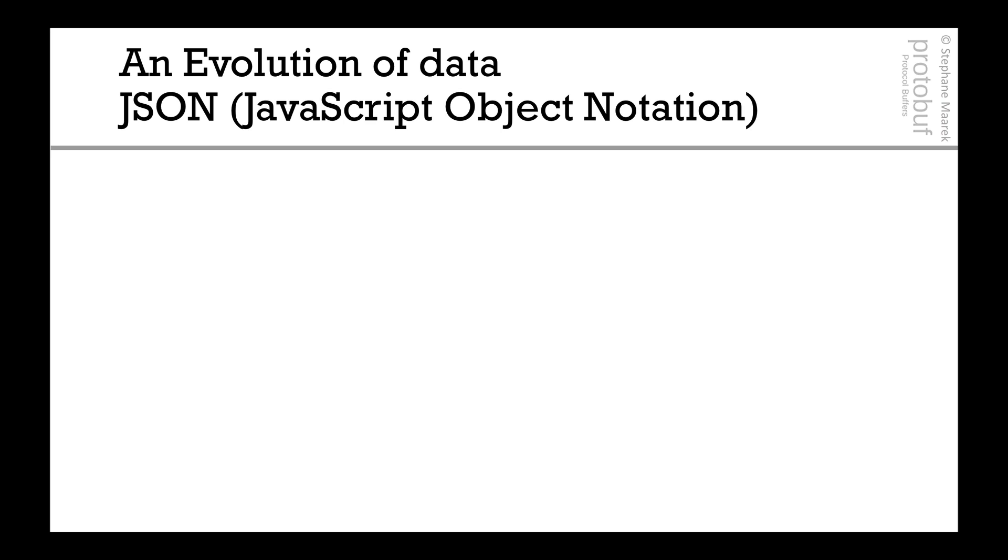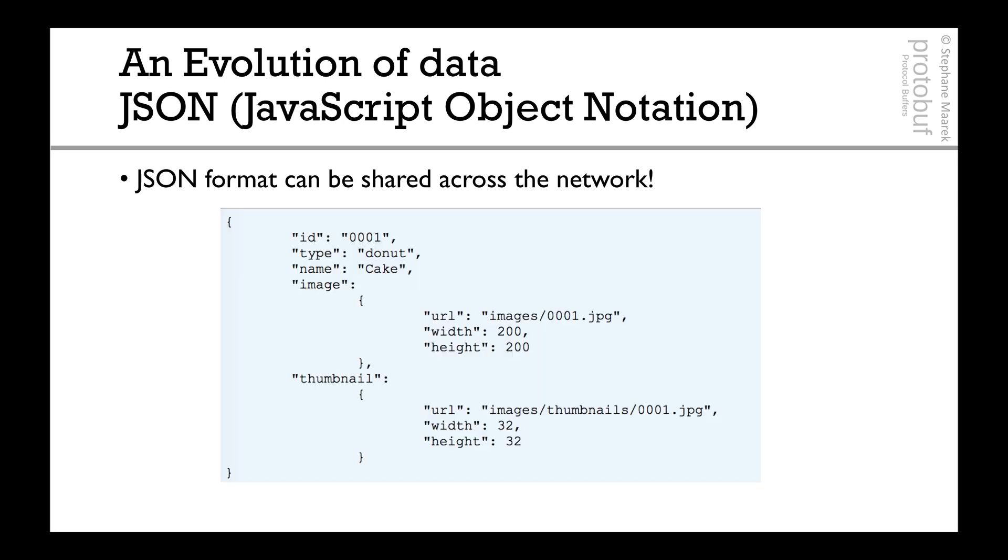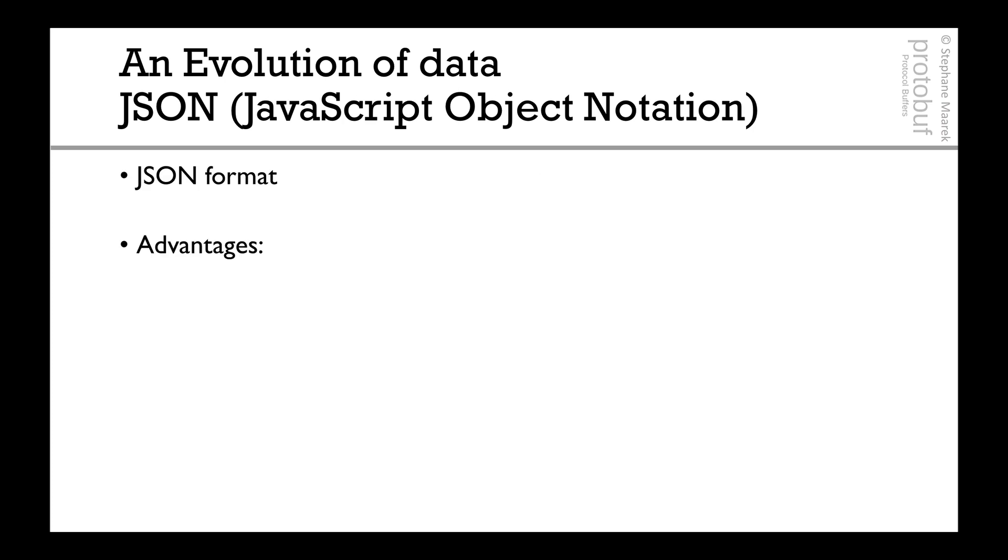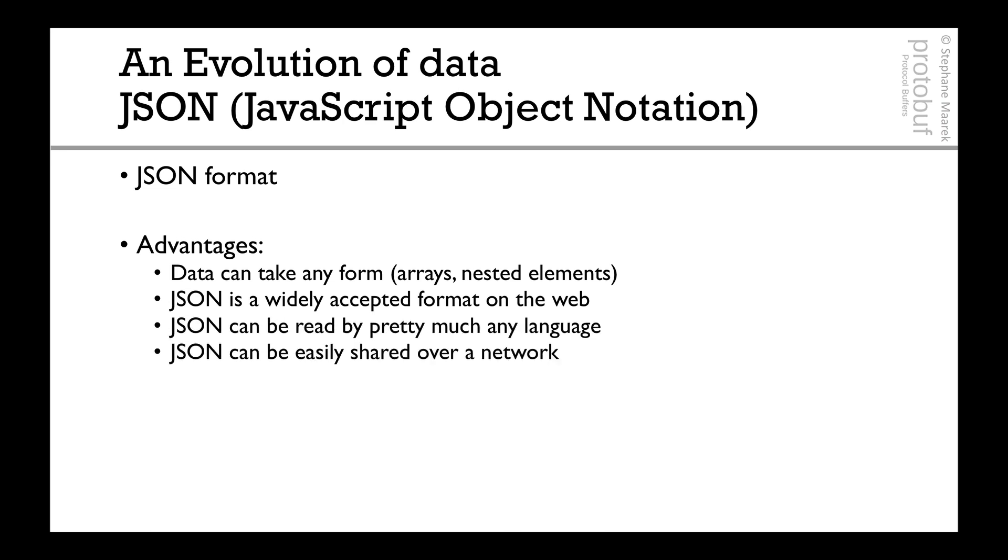So next there is JSON. And JSON is really a revolution because it was able to be shared across the network. JSON is really nice. You've probably seen this before. It's something really easy to share across the web and to make sense of when you look at it. Now we look at JSON format, the advantage is that it can take any form such as it's an array, it's nested elements. It's widely accepted. Every single language can read JSON documents. It's very easy. And it's very easily shared over a network because it's text.